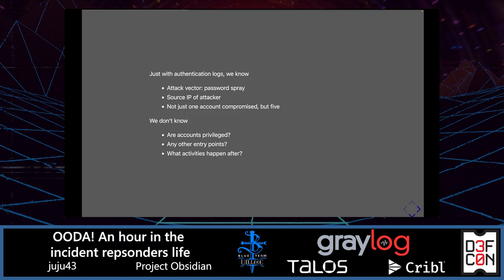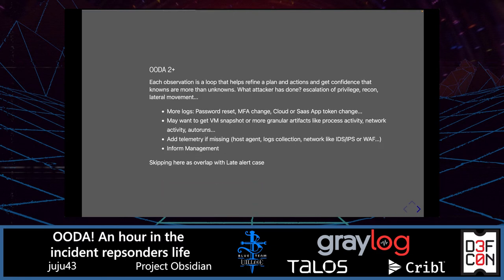Some things we still don't know: are those accounts privileged? Are there any other entry points? And what activity happened after the initial access? For further iterations of the OODA loop, we can check if there were password resets, MFA changes, or cloud app token changes. We may want to collect more information — through a VM snapshot or more granular artifact collection such as process activity, network activity, and auto-runs. Depending on the environment, we may want to add telemetry if missing: host agents, log collection, network collection, and systems like IDS/IPS. And depending on the assessment, notify management — timing varies by company process.